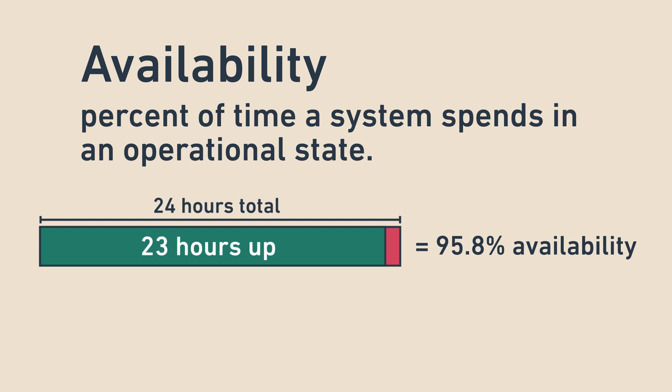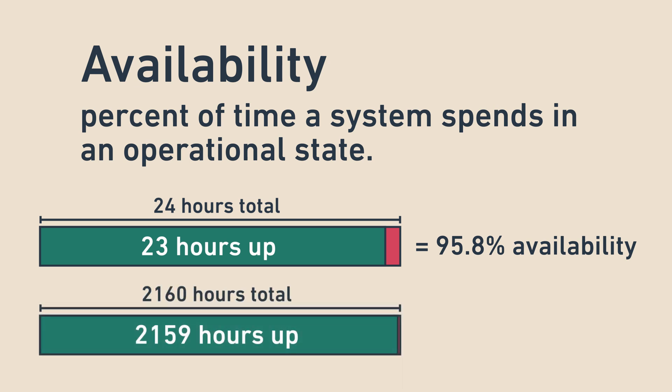If a system is down for 1 hour every 3 months, which we approximate as 2,160 hours, that means it is up for 2,159 hours and therefore the availability is 2,159 hours divided by 2,160 hours equals 99.95% availability.